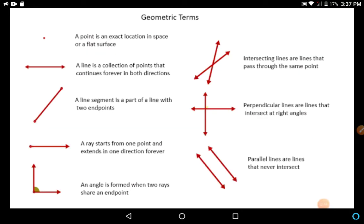Before proceeding further, let us revise some geometrical terms. A point is an exact location in space or a flat surface. A line is a collection of points that continues forever in both directions. A line segment is a part of a line with two end points.